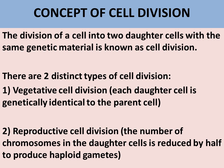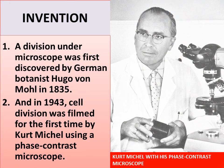Number one: vegetative cell division, in which each daughter cell is genetically identical to the parent cell. Number two: reproductive cell division, in which the number of chromosomes in the daughter cells is reduced by half to produce haploid gametes.